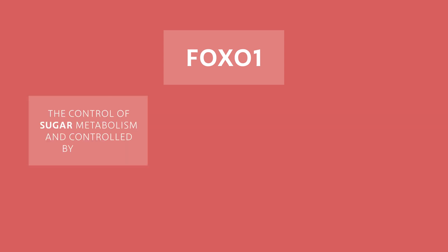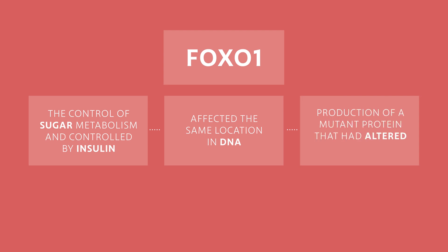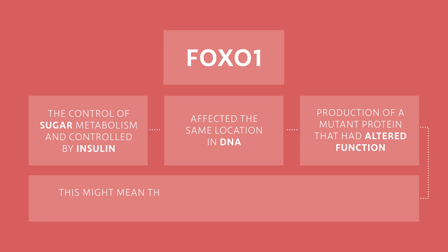The mutations all affected the same location in DNA, leading to the production of a mutant protein that had altered function — its movement was no longer controlled by insulin. This might mean that these mutations could worsen diabetes in people with liver disease.